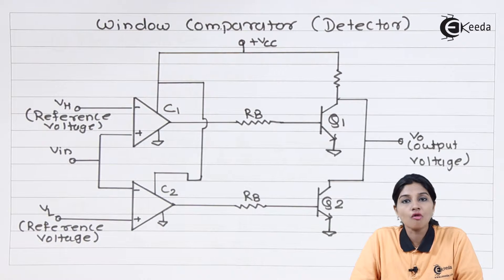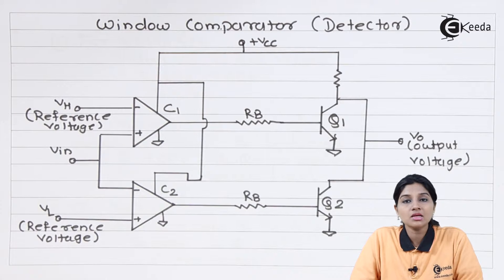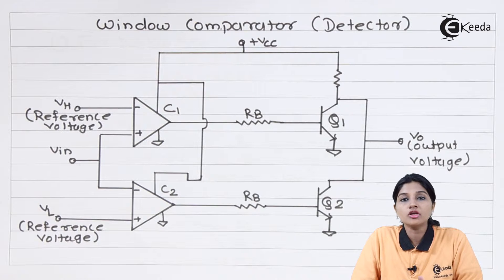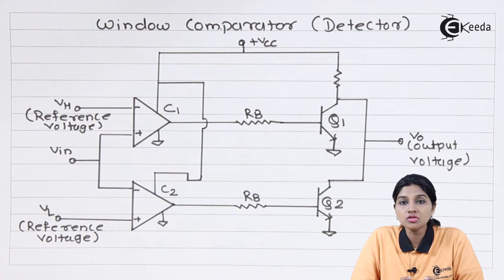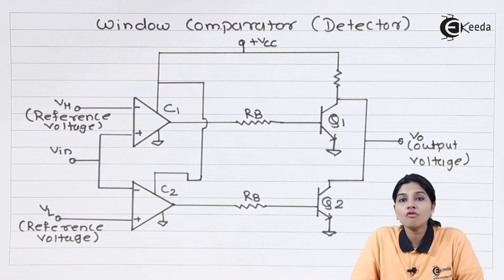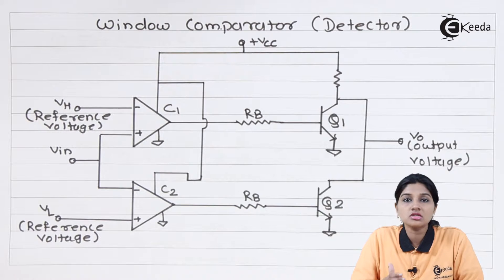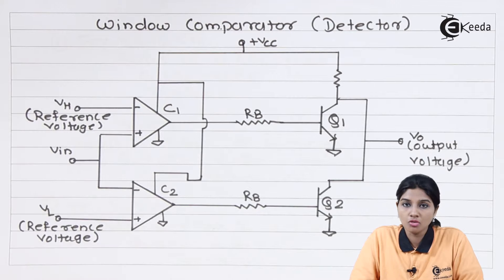One application of op-amp as a comparator is the window detector. As its name indicates, a window is nothing but a band of voltage. This band of voltage is defined by the user and is called the reference band of voltage. The window detector is used to detect whether the input signal falls within that window or not. If the input signal falls within the window it provides output; if the signal increases or decreases beyond the window level there will be no output.